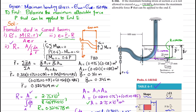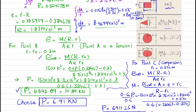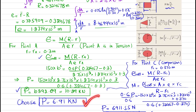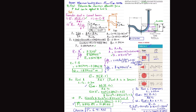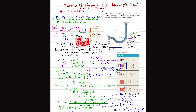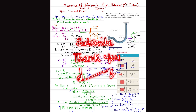The answer is P = 6.91 kN. We choose the smaller load because applying 10.29 kN would exceed the allowable stress at point C, causing failure. That concludes problem 6-142. I hope you enjoyed this video and learned from it. If you're new to the channel, please subscribe and press the bell icon for notifications. Feel free to ask questions in the comment section. Thank you for watching.